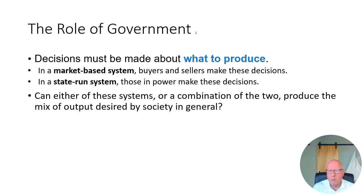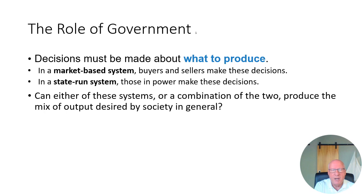But if people are worried about the range of an electric car and instead choose to buy a gasoline-powered car to go to Disney World, where it can be refueled very easily as opposed to plugging in an electric car, then the market system produces gasoline cars. The market system does not produce things based on some theoretical ideal of what's good for the planet. We produce things that people are willing to pay for — it's what people want.